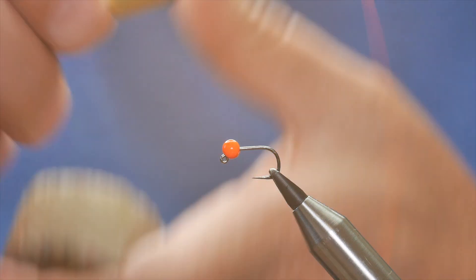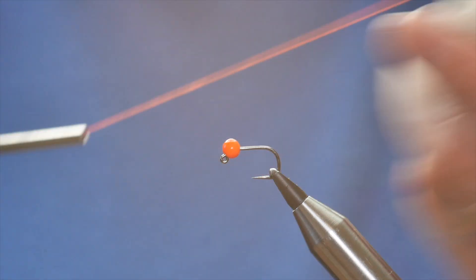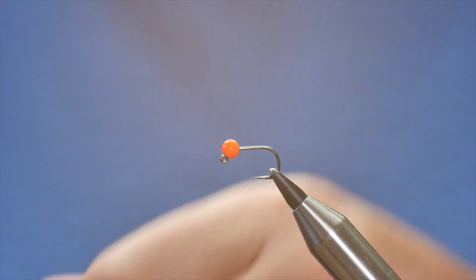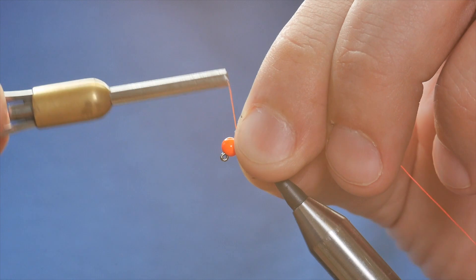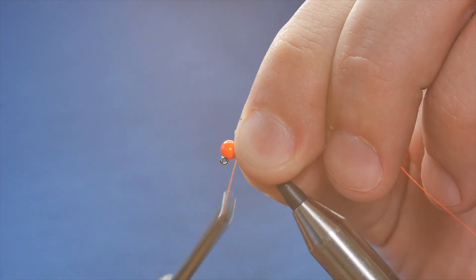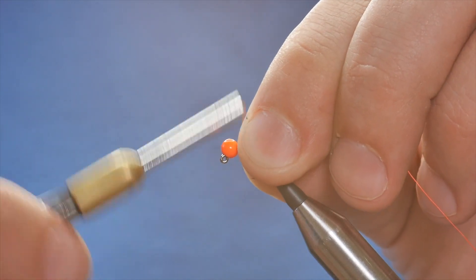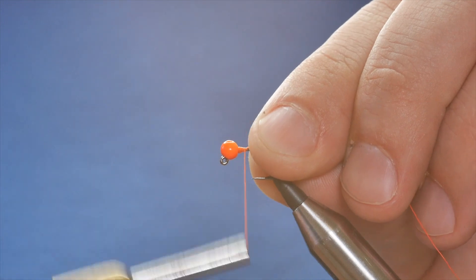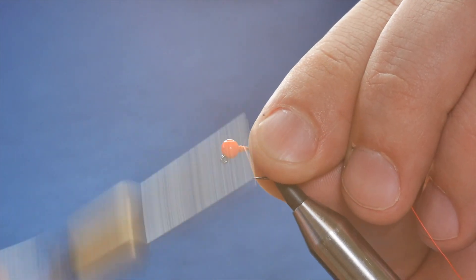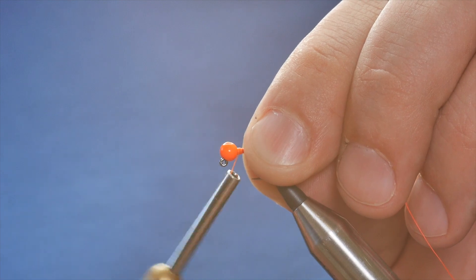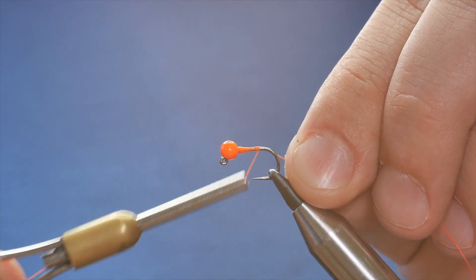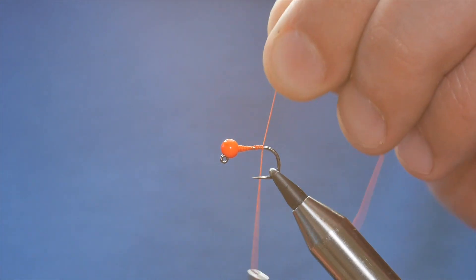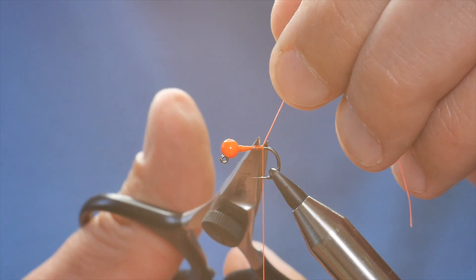First thing to do then is to cast on my thread after giving it a good wax. Push your bead right up around the bend of the jig and catch that in. And I like to just build on a little on-ramp here as I do with most of my jig flies. I'm going to bring that to the back of the hook, just about to where the barb would be.